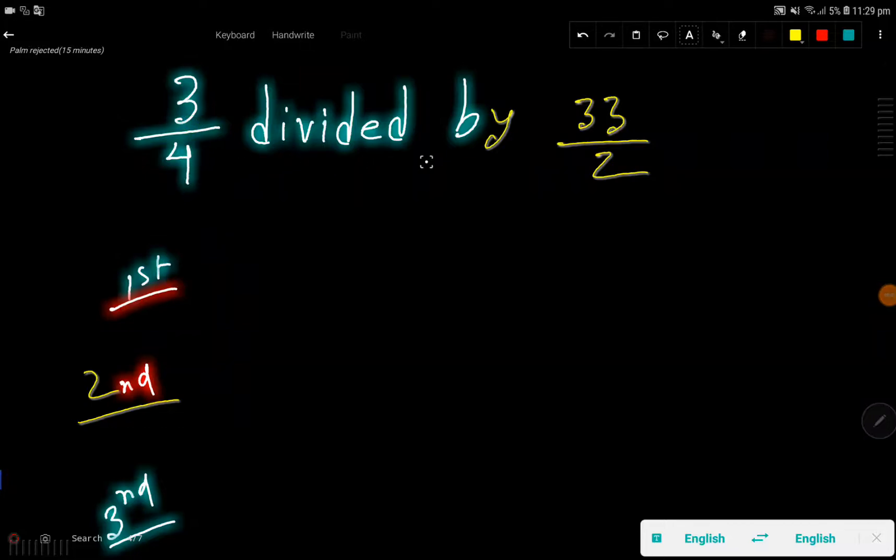3 over 4 divided by 33 over 2. Okay, in the first step I'll translate this. So 3 over 4 divided by, means this division sign, then we have 33 over 2.